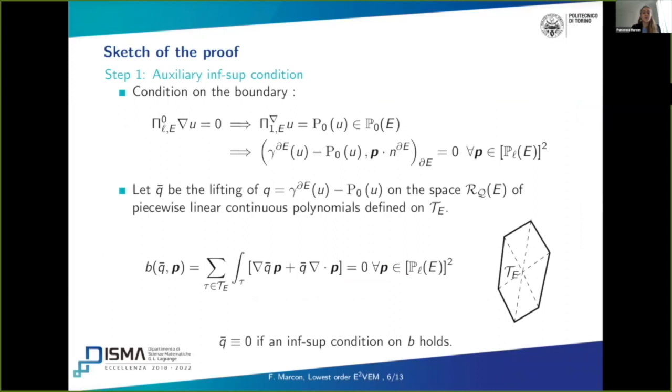Now, briefly, I want to give you the sketch of the proof of this theorem. It is done in two steps. The first one is to prove that there is a sufficient condition for the thesis that is an auxiliary inf-sup condition. And then the second step is obviously the proof of this inf-sup condition. So first, we prove that the hypothesis that pi0L on the gradient of U is equal to zero implies that the PI_NABLA of U is a constant, then it is equal to pi0 of U. Then, by exploiting the definition of this projector pi0L, we obtain this second relation.